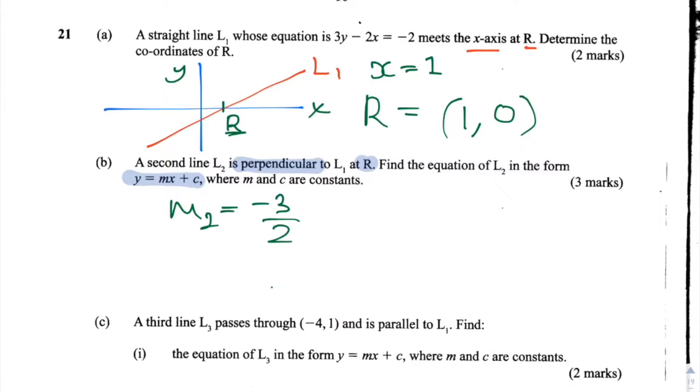So what do we know now? We know that m2 equals minus 3 over 2. We also know that L2 shares the point R which is given by 1 comma 0 with L1. So by substituting these values into y equals mx plus c, we can find the c or the y-axis intercept for the line L2.